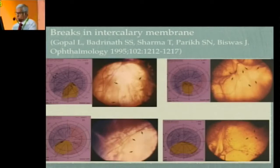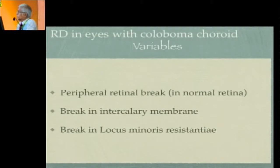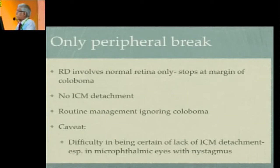The variables in an eye with coloboma are: a peripheral retinal break which may or may not be present, but you need a break in the intercalary membrane and a break in the area of least resistance for the coloboma itself to be responsible for the retinal detachment. If you have only a peripheral break, it is the same as any other eye without coloboma — the RD involves only normal retina, doesn't encroach within the colobomatous area, there is no ICM detachment, and management is routine. However, before managing it as routine, you must be sure there is really no intercalary membrane detachment, as a small area of detachment at the margin can be easily missed in a microophthalmic eye with nystagmus.